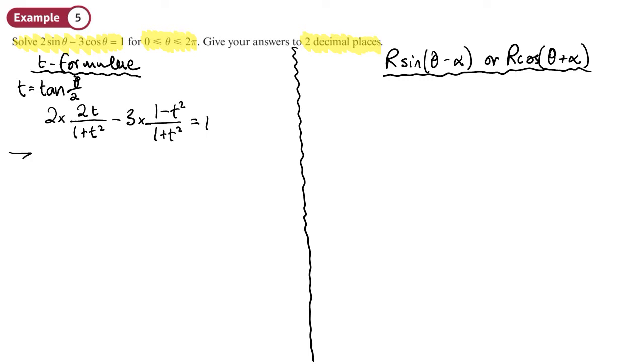That will give us 4t minus, now we can put these all together because they're the same denominator, minus 3 plus 3t squared all over 1 plus t squared equals 1. Then we'll times both sides by 1 plus t squared, so I've got 3t squared plus 4t minus 3 equals 1 plus t squared.